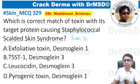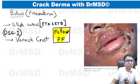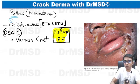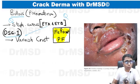It is also called Ritter's disease, and basically this is an extended version of Bullous Impetigo. If you understand Bullous Impetigo, you will also understand Staphylococcal Scalded Skin Syndrome. Bullous Impetigo is caused by Staphylococcus aureus, which produces a toxin — exfoliative toxin or epidermolytic toxin A and B — and both of these damage Desmoglein 1.